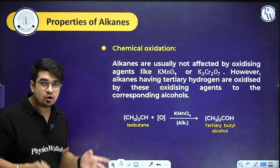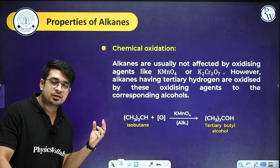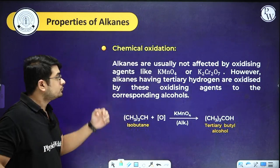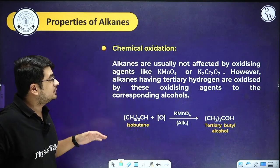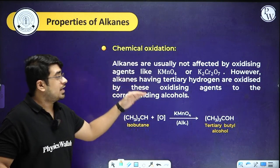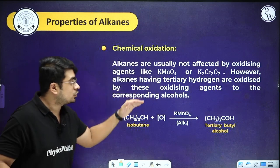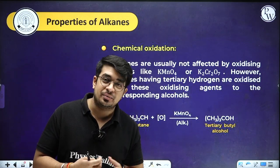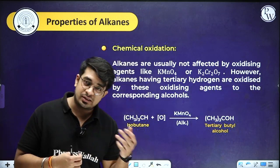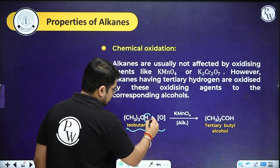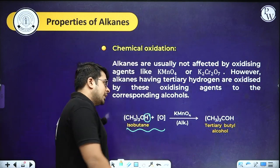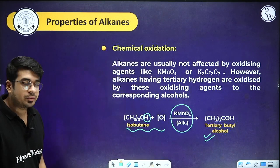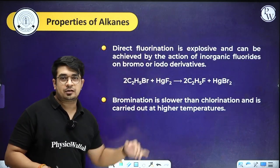In chemical oxidation, instead of a catalyst, oxidizing agents like KMnO4 or K2Cr2O7 are used. Alkanes are usually not affected by these oxidizing agents, but alkanes having a tertiary hydrogen are oxidized to the corresponding alcohols. For example, the tertiary hydrogen connected to a tertiary carbon in the presence of alkaline KMnO4 forms tertiary butyl alcohol.